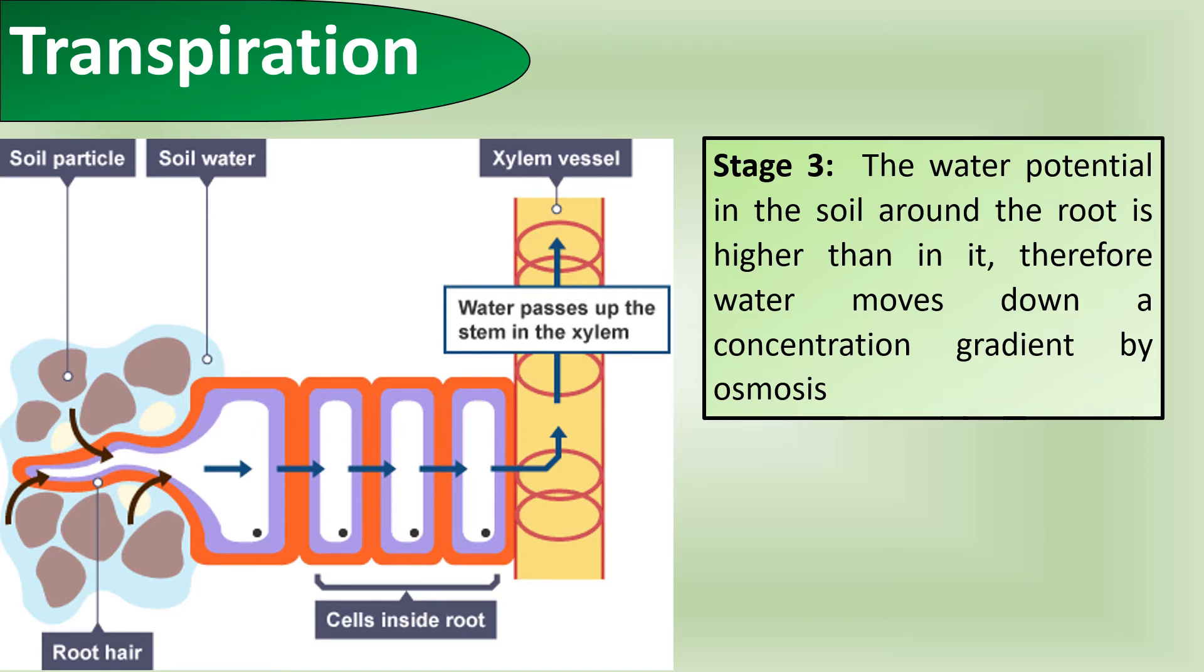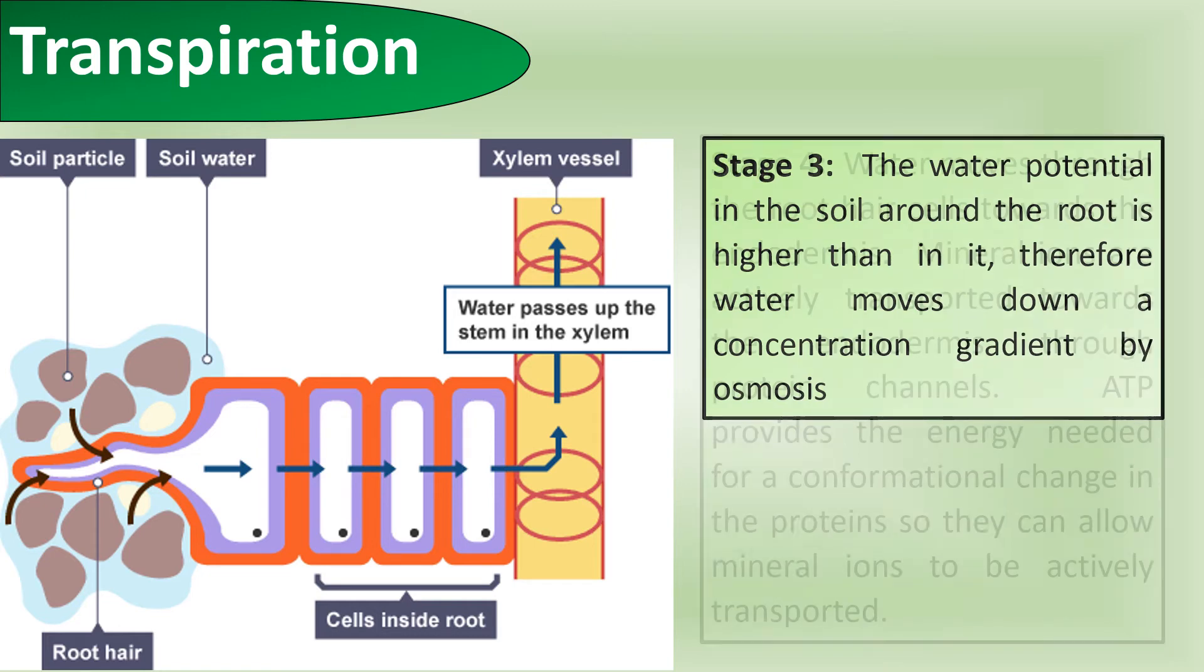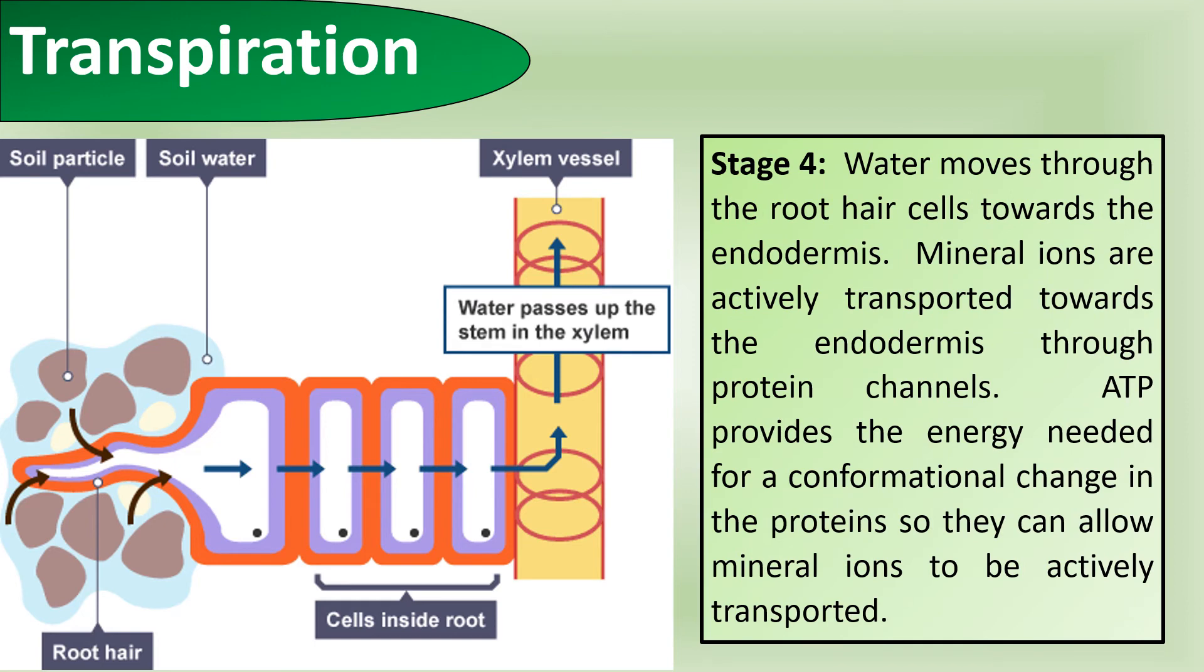It's a key thing to remember here that whenever we're talking about movement of water, we refer to it as osmosis. Water moves through the root hair cells towards the endodermis. Mineral ions are actively transported towards the endodermis through protein channels. ATP provides the energy needed for the conformational change in the proteins so that they can allow the minerals to be actively transported.